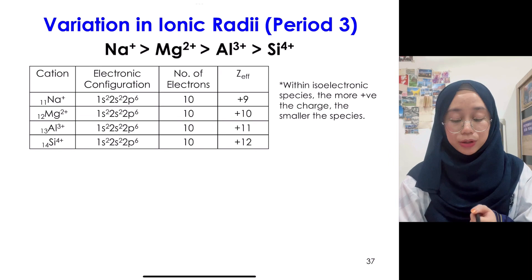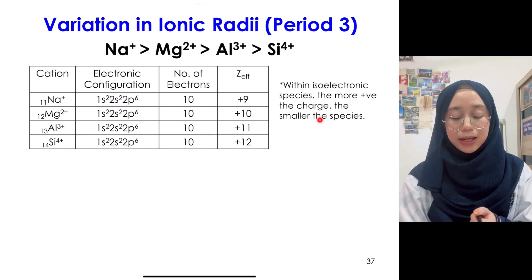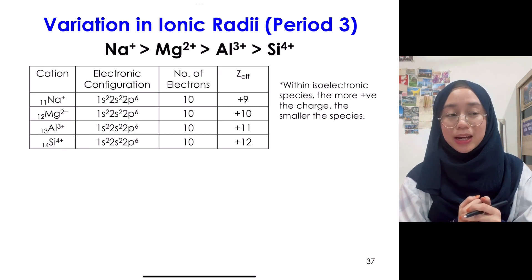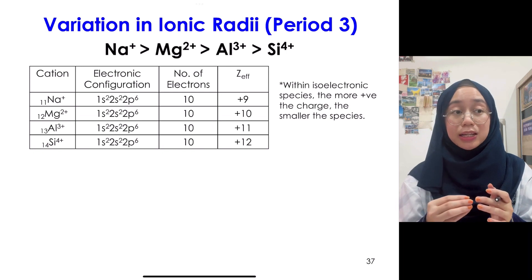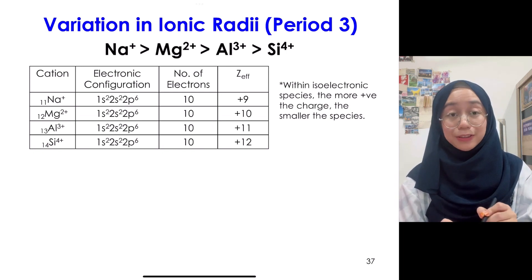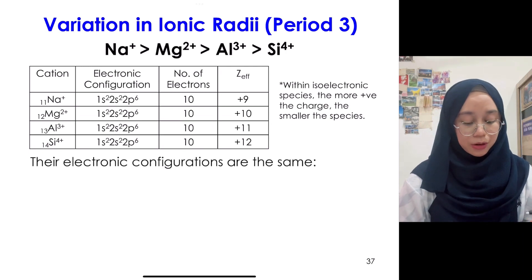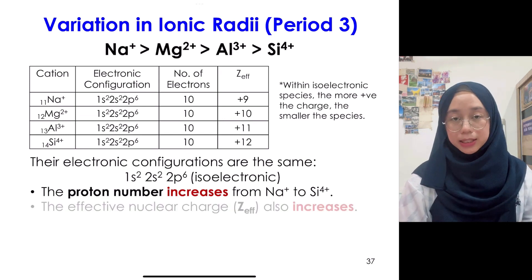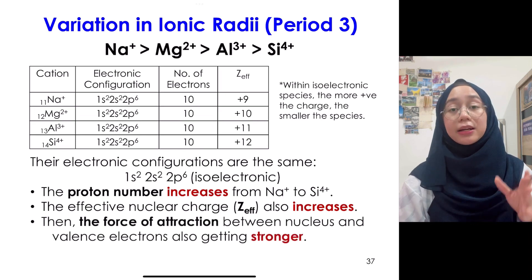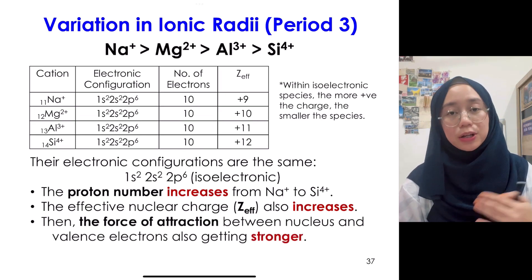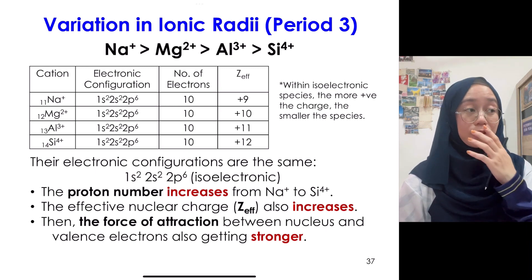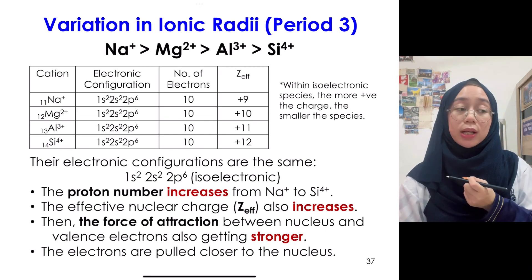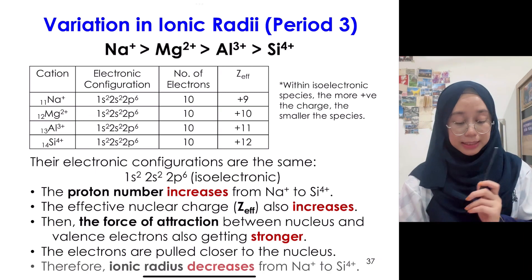Within isoelectronic species for positive ions: the larger the positive charge, the smaller the species — opposite to anions. The electronic configuration is the same (1s² 2s² 2p⁶) for all four species. The proton number increases from Na⁺ to Si⁴⁺, so effective nuclear charge increases, making forces of attraction between nucleus and valence electrons stronger. The electrons are pulled closer to the nucleus, so size becomes smaller from Na⁺ to Si⁴⁺.